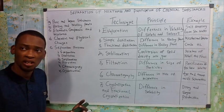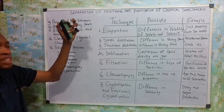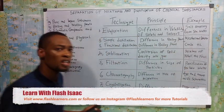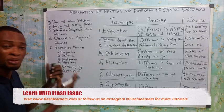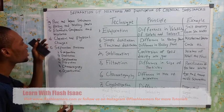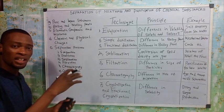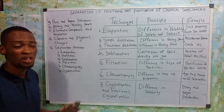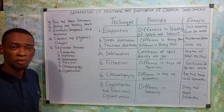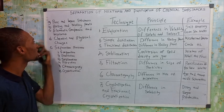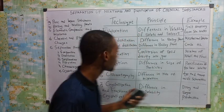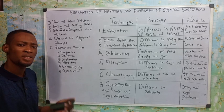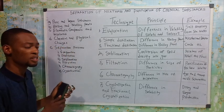Melting point is the temperature at which a substance changes from solid state to liquid state. At the melting point, solid and liquid exist in the same phase. For boiling point, it is the temperature at which water changes from liquid state to vapor. The standard definition: boiling point is the temperature at which the saturated vapor pressure equals the atmospheric pressure.